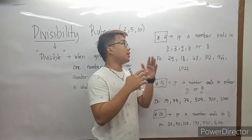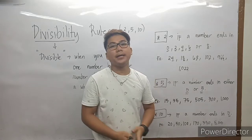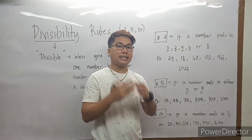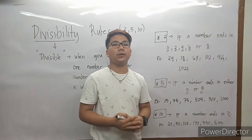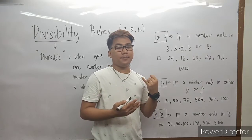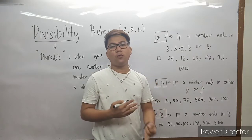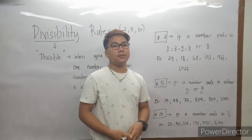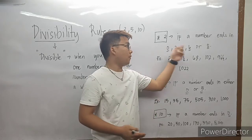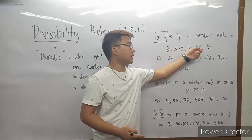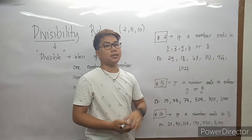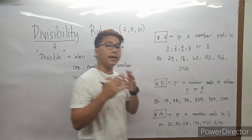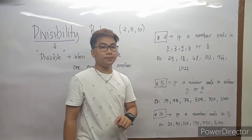Tatandaan natin yun — yung mga numbers na nagtatapos sa even number, automatic divisible by 2. Ano ba yung mga even number? 2, 4, 6, 8, etc. Mga nagtatapos sa 2, 4, 6, 8, or 0 — those are numbers that are divisible by 2. Okay tayo na kay 2?